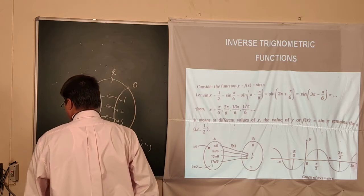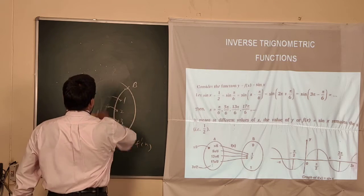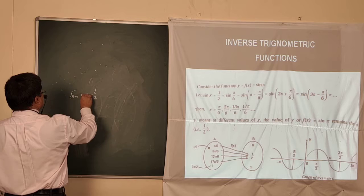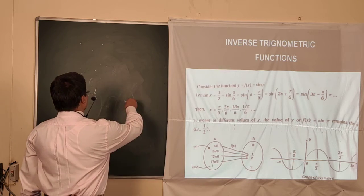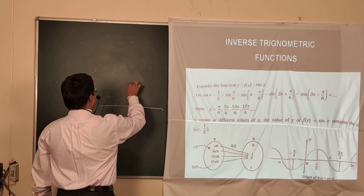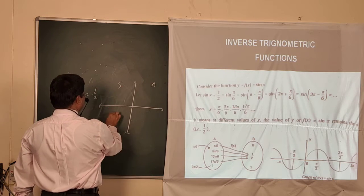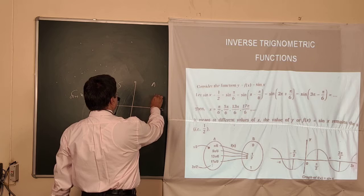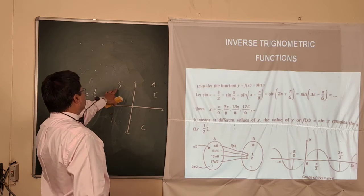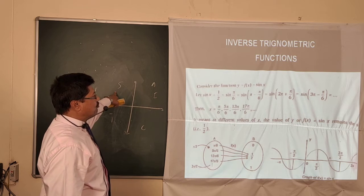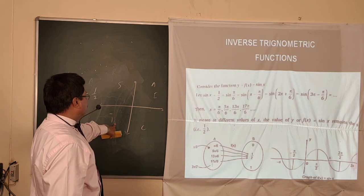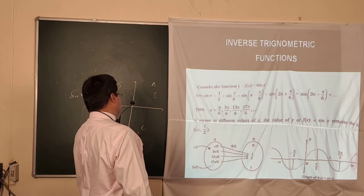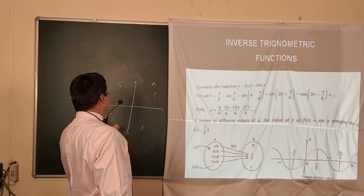Now in trigonometric functions, suppose I take a value like 1/2 for sin x. For x we will get different values depending on the quadrant. Remember A, S, T, C — 'Add Sugar To Coffee' — in the first quadrant all trig ratios are positive, in the second quadrant sin is positive, in the third tan and cot are positive, and in the fourth cos and sec are positive.